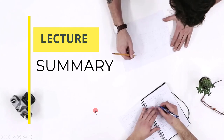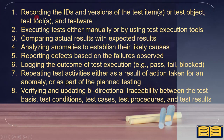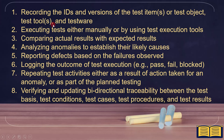Now let's summarize all the points discussed. Recording the IDs and versions of the test items or test object, test tool, and testware. Executing tests either manually or by using test execution tools. Comparing actual results with expected results. Analyzing anomalies to establish their likely causes. Reporting defects based on the failures observed. Logging the outcome of test execution — for example, pass, fail, blocked. Repeating test activities either as a result of action taken for an anomaly or as part of the planned testing. Verifying and updating bi-directional traceability between the test basis, test conditions, test cases, test procedures, and test results.